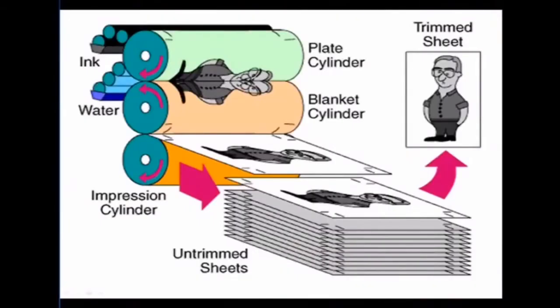Lithography is based on the principle that oil and water repel each other. On the printing plate, an oil-based ink is attracted to an image area while non-image areas accept water, thus the two areas remain distinct from one another. The lithography process is comprised of a series of rollers and cylinders. One set of rollers brings a water-based solution to the plate and another set brings an oil-based ink. The plate, which is wrapped around a cylinder, contacts the roller system. Water clings to the non-image areas of the plate while the oily ink sticks to the image areas. The ink is then transferred to an intermediate cylinder called the blanket cylinder, which is forced against the paper, thus transferring the image.